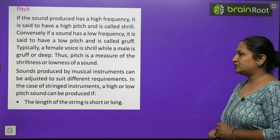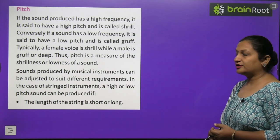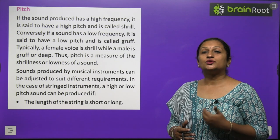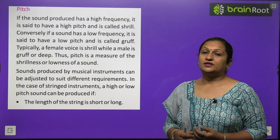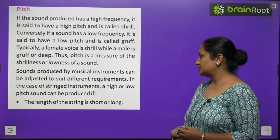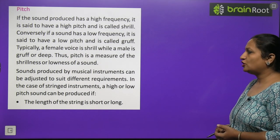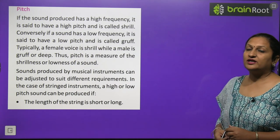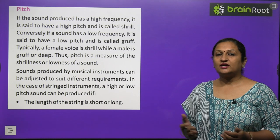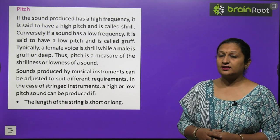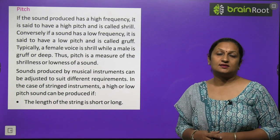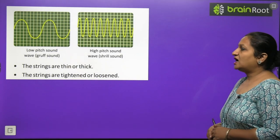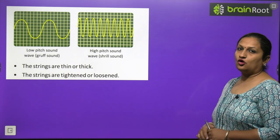Sound produced by musical instruments can be adjusted to suit different requirements. We can adjust the sound in musical instruments to raise the pitch or loudness by adjusting the frequency and amplitude. In case of stringed instruments, a high or low pitch sound can be produced if the length of the string is short or long. To change the pitch, we can make the string longer or shorter, change its thickness, or make it loose or tight.